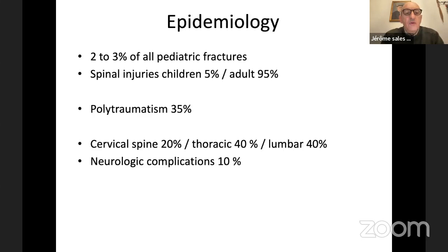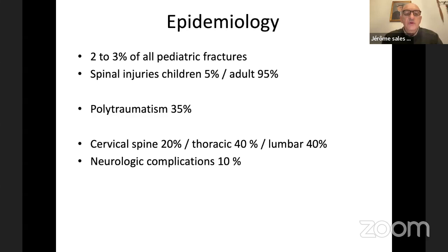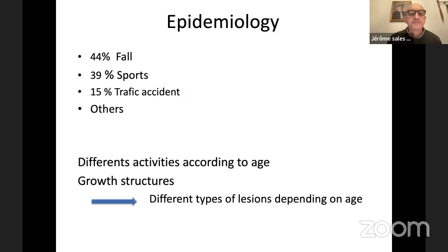It's very important to know that it arrives often in polytraumatism in more than 35% of cases, so you have to do a very thorough examination of all parts of the body. Concerning localization, it arrives at the cervical spine in 20% of cases, 40% in thoracic, and 40% in lumbar. In 10% of cases, you can have neurologic complications, so you must do immediately a very good neurologic examination for the child.